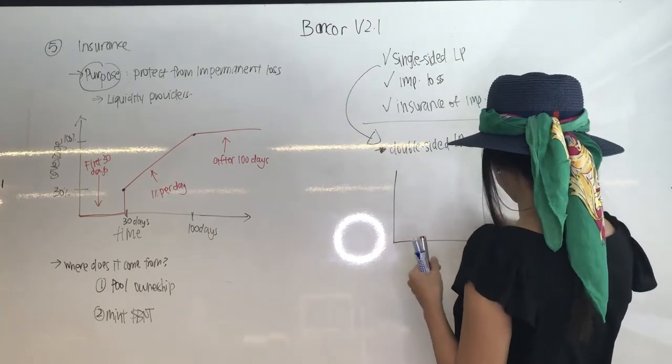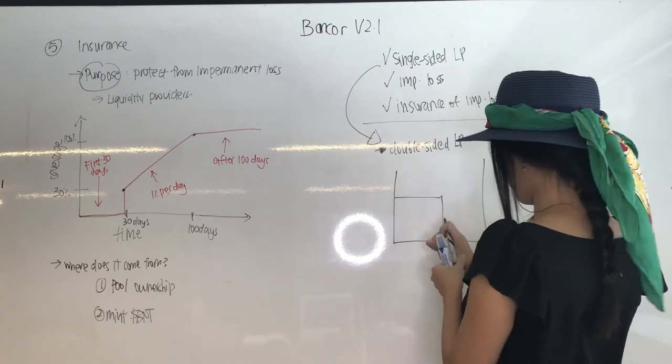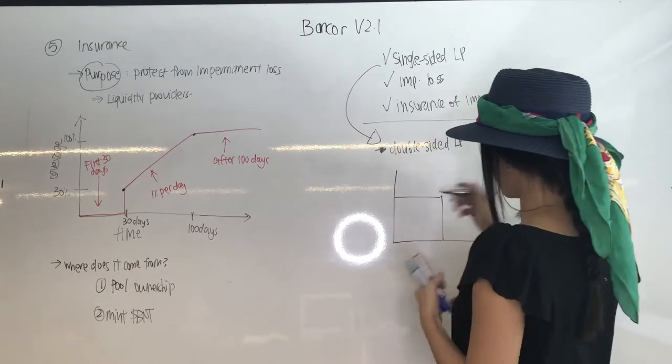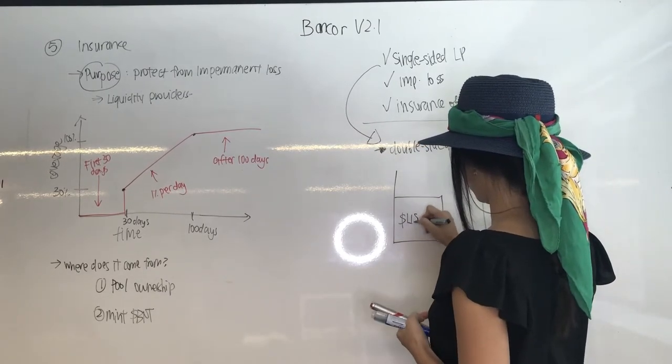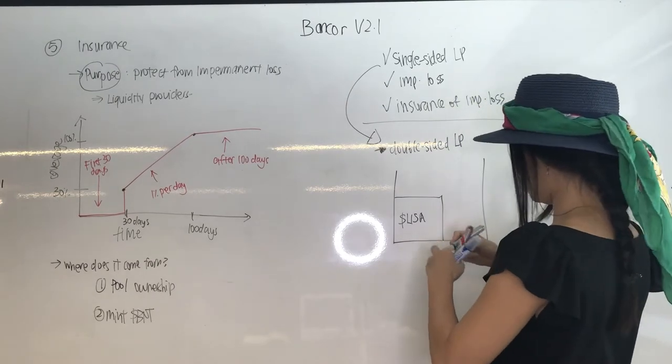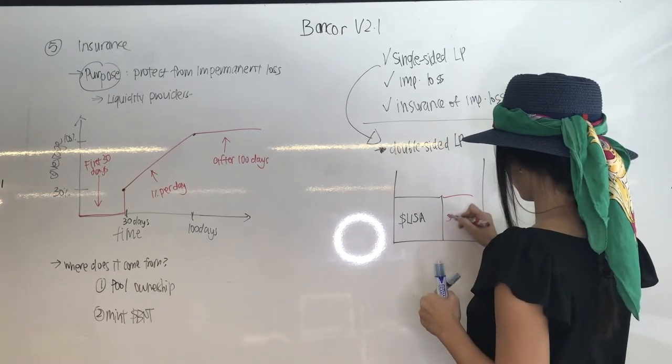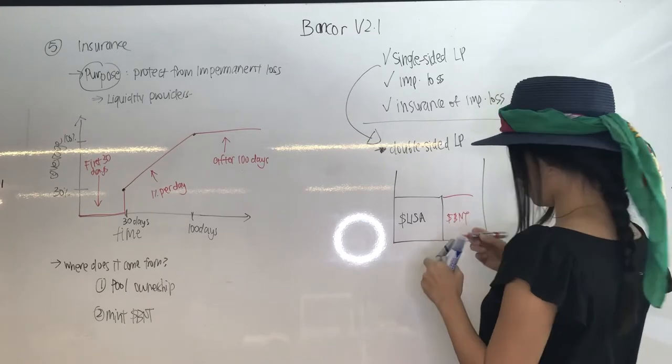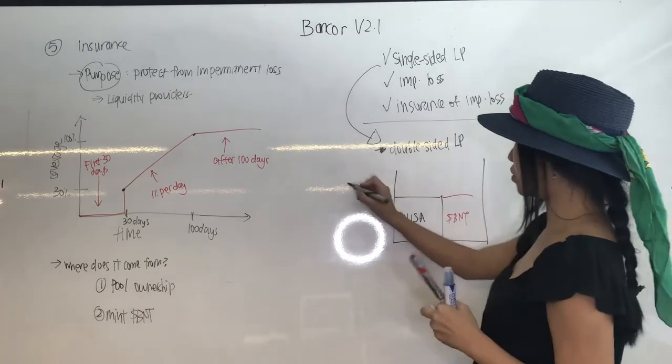So again, let's start the same way. We have a liquidity pool and we start with adding LISA tokens. So step one, adding LISA tokens. And step two, the protocol will mint BNT tokens. Simple, right?